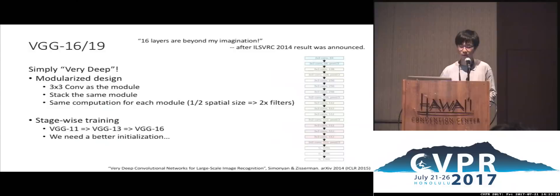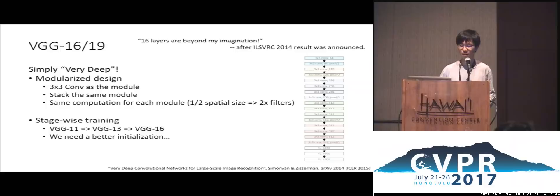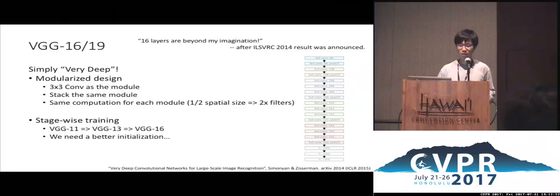Another milestone is the VGGNetwork. I still remember when we saw the ImageNet 2014 results and discovered networks with 16 or even 19 layers — it was beyond our imagination. VGGNetworks are very simple, which makes them very robust. The key design is modularization: they stack a lot of 3×3 convolutions following simple rules. In the same stage, all layers have the same shape, and when spatial size is reduced, they increase the number of filters to roughly keep computation constant per module.